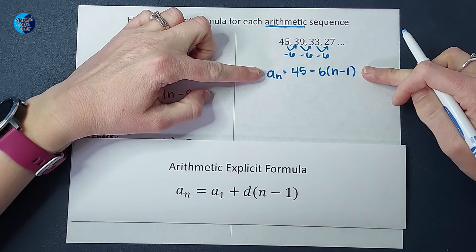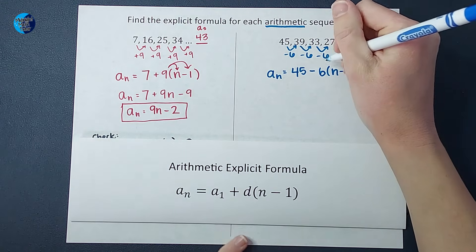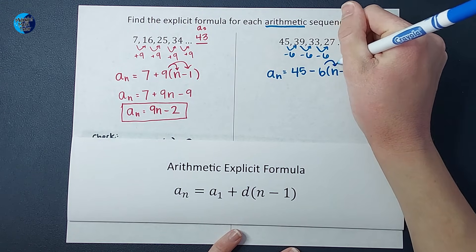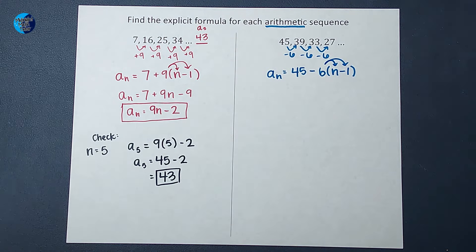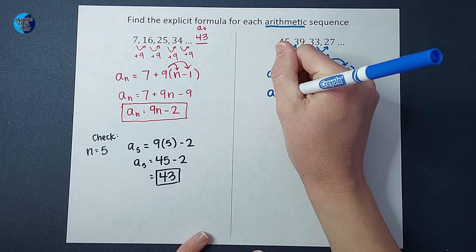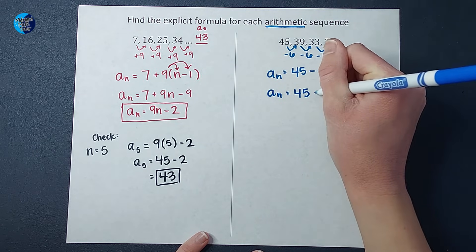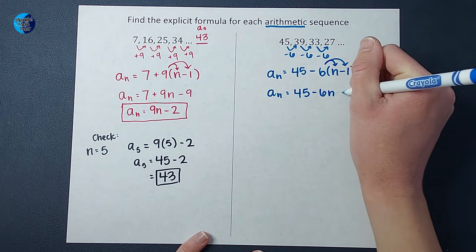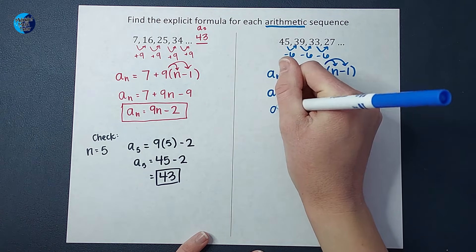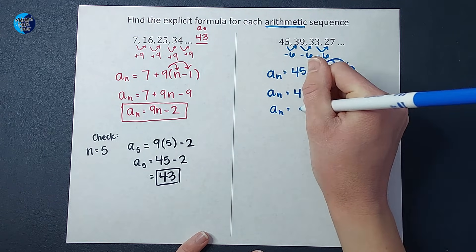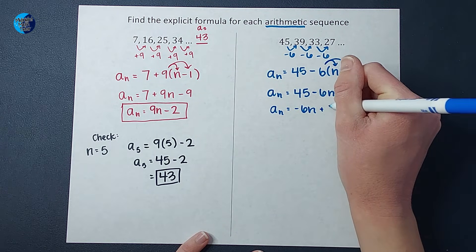Again, some teachers might want you to leave your answer just like that. Beautiful. Some want you to simplify it down further. So let's go ahead and distribute that negative six in. So we are going to have a sub n equals 45 minus six n plus six.